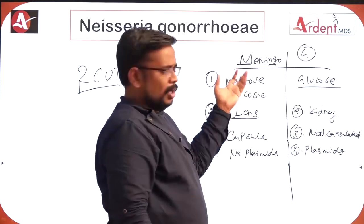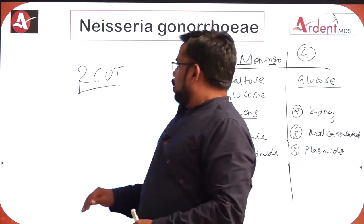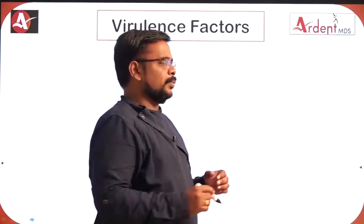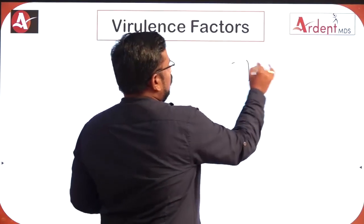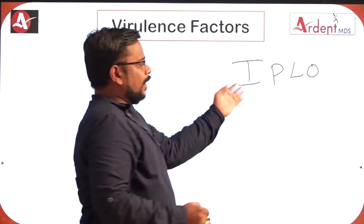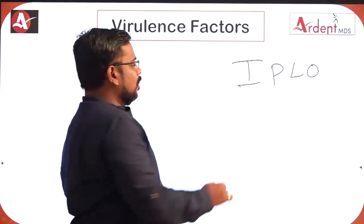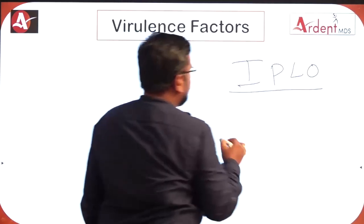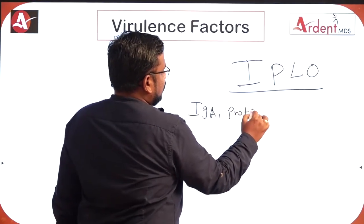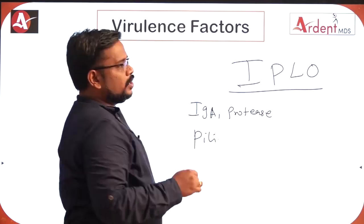Meningococci causes meningitis; gonococci causes gonorrhea. For the virulence factors of gonococci, remember the mnemonic IPLO. In meningococci it is SIPLO because it has a capsule. For gonococci just remember IPLO: I for IgA1 protease, P for pili, which is responsible for adhesion of the microorganism.